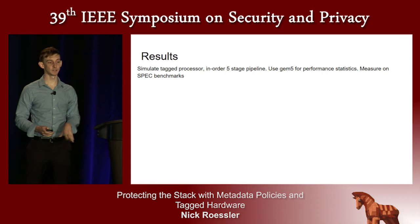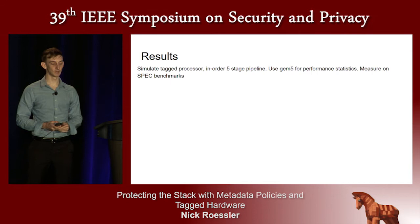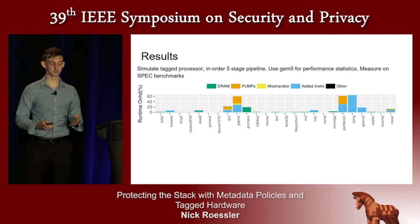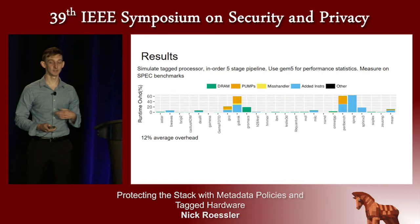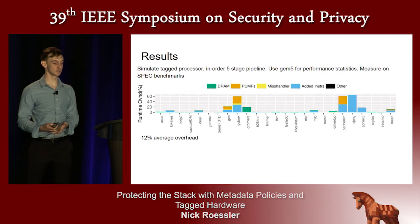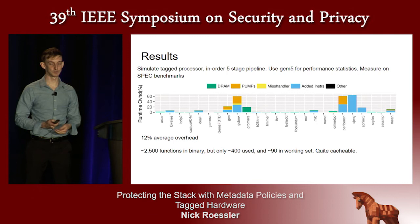We've seen a complete policy and can look at some results. We simulate a tagged processor with an in-order five-stage pipeline, use Gem5 for performance statistics, and measure our overheads on the SPEC benchmarks. The average overhead for this naive implementation is about 12%. The yellow component corresponds to the miss handler — the software that runs whenever we take a miss in our rule cache. This is a very small contribution because the rules for this policy are very cacheable. There are about 2,500 functions on average in the SPEC benchmarks compiled with dash-static, but only about 400 are used and only about 90 functions are active in the working sets once they reach steady state.